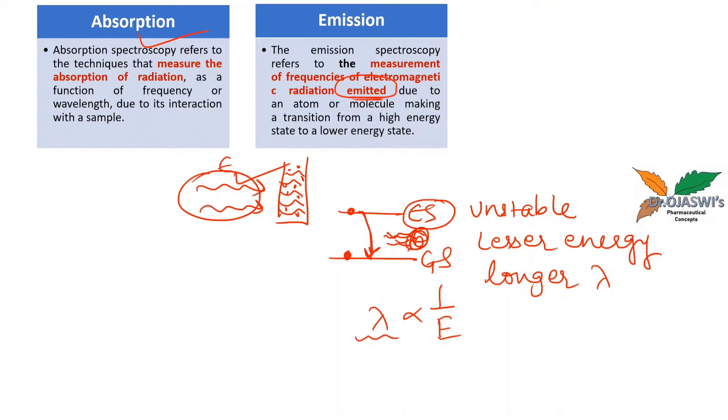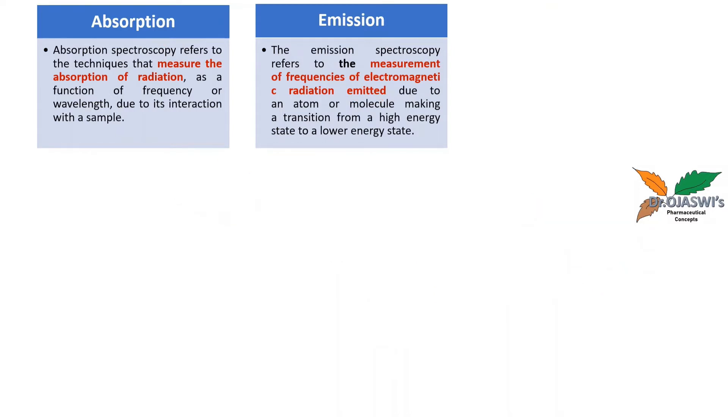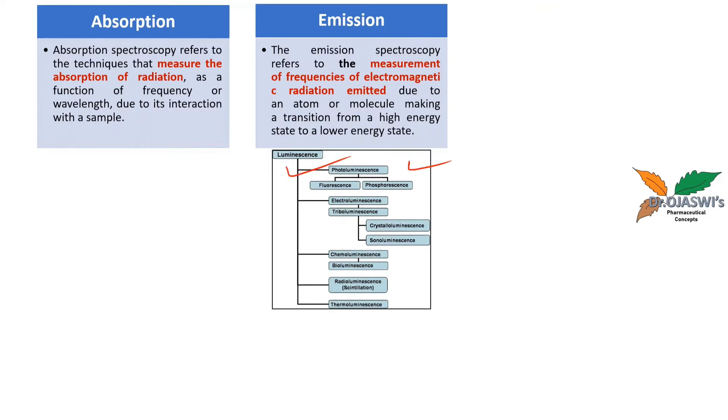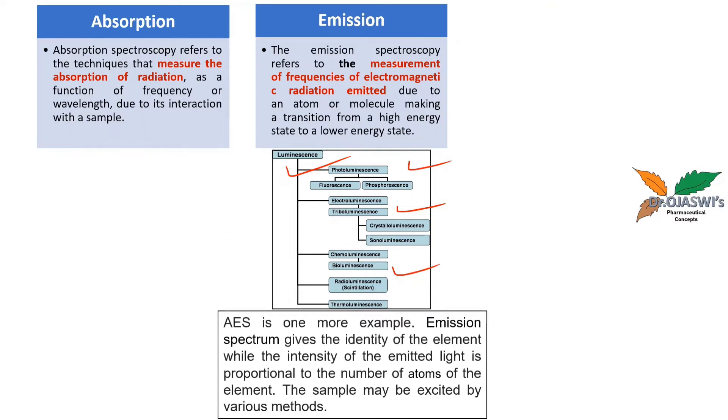So this was all about emission spectroscopy. Many examples we know under emission spectroscopy, which comprises of luminescence, phosphorescence, photoluminescence, chemiluminescence, and in addition to that we have atomic emission spectroscopy also. Emission spectrum gives the identity of the element. The spectrum, whatever graph we get at the end of this emission spectroscopy, that graph is unique for each chemical structure. The intensity of emitted radiations is directly proportional to the number of atoms of the element. The next term is transmittance.